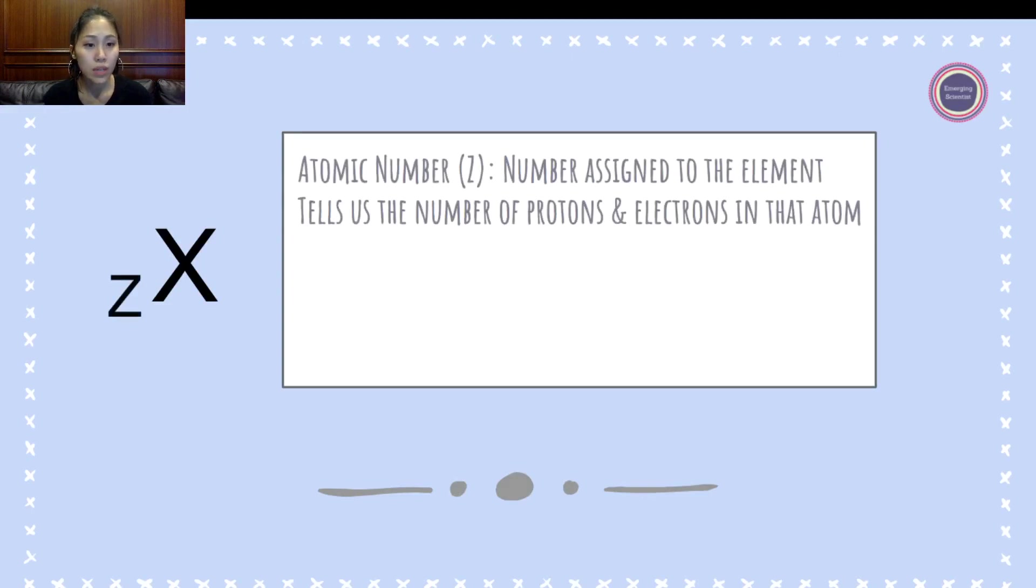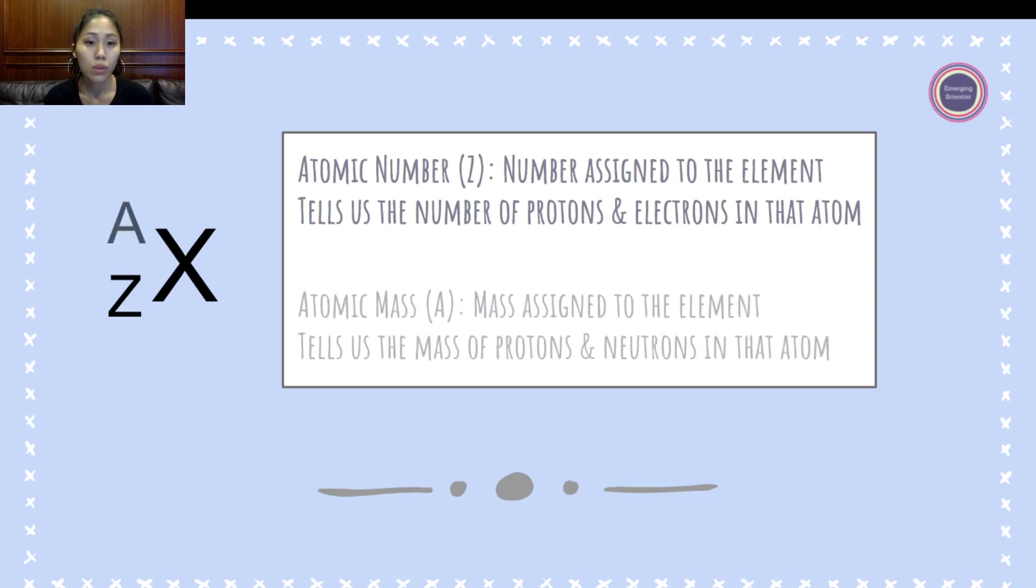So the atomic number, Z, that's the subscript. That's the number assigned to the element and tells us the number of protons and electrons in that atom. Atomic mass is represented as A and that symbol is a mass assigned to the element and tells us the mass of protons and neutrons in that atom.